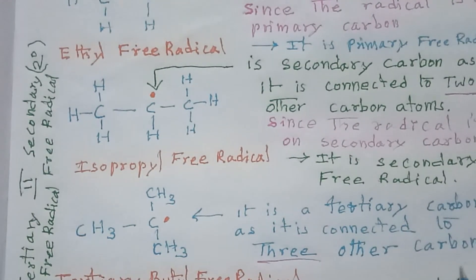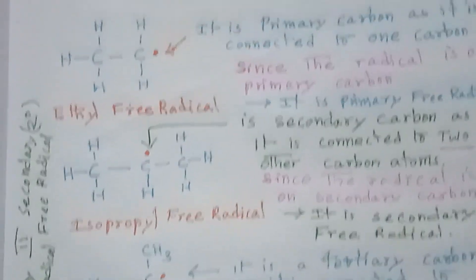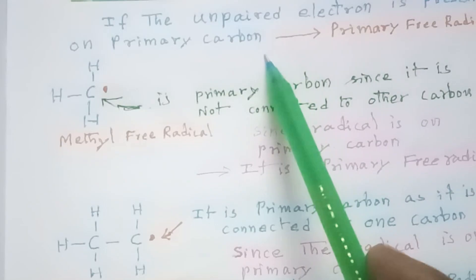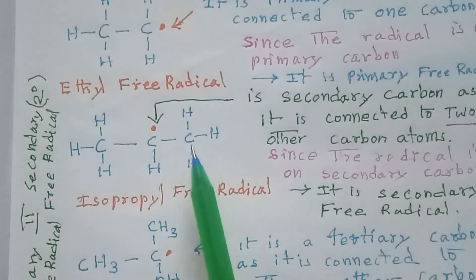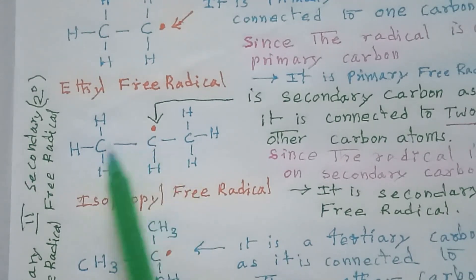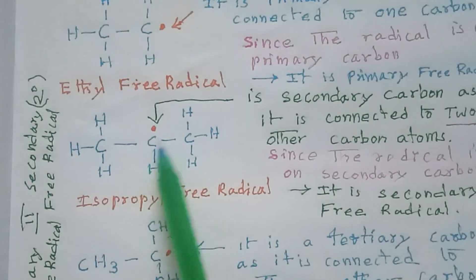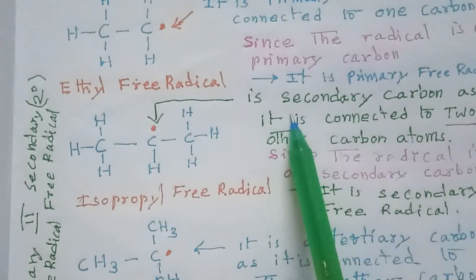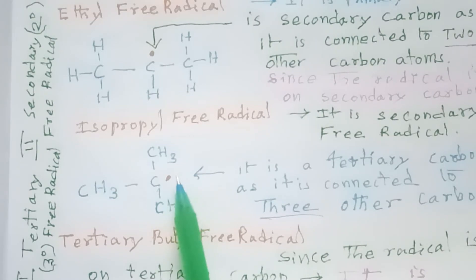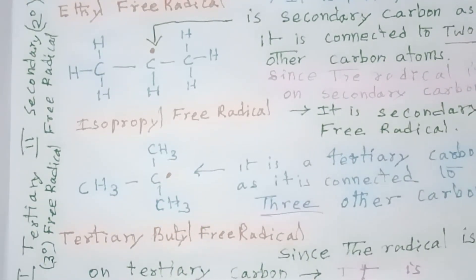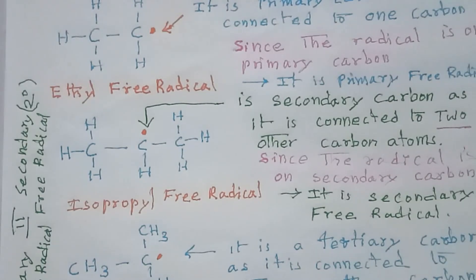So there are three types of free radicals: primary free radical, secondary free radical, and tertiary free radical. In a primary free radical, the radical carbon is not connected to any other carbon, or is connected to only one other carbon. In a secondary free radical, the carbon is connected to two other carbons. In a tertiary free radical, the radical carbon is connected to three other carbon atoms.